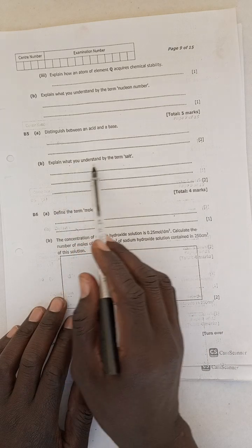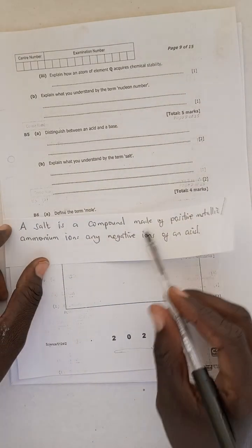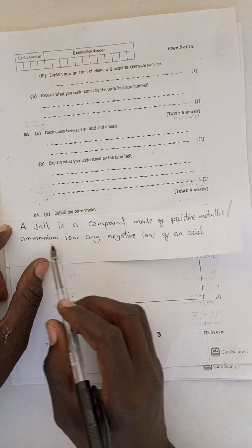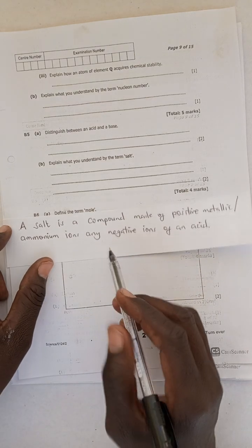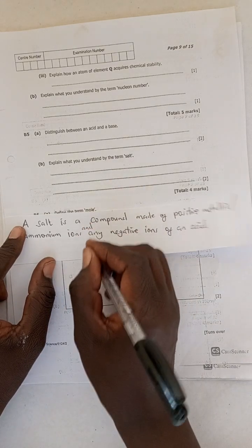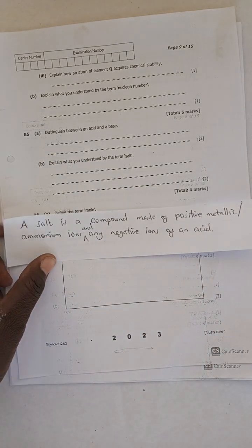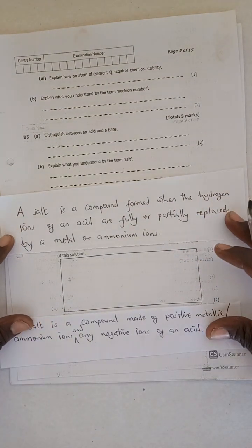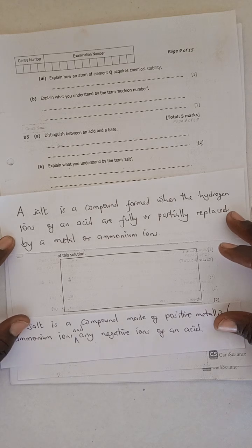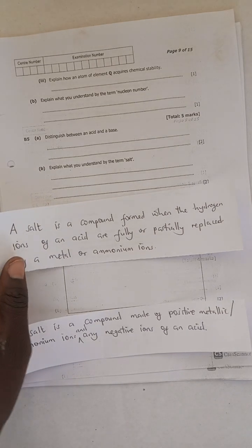The next question says, explain what you understand by the term a salt. So what is a salt? By definition, a salt is a compound made up of positive metallic or ammonium ions and any negative ions of an acid. The other definition which is common among learners is that a salt is a compound formed when hydrogen ions of an acid are fully or partially replaced by a metal or ammonium ion.